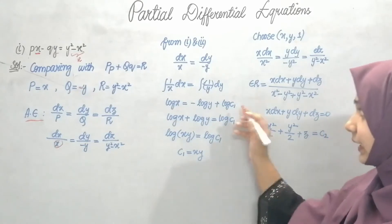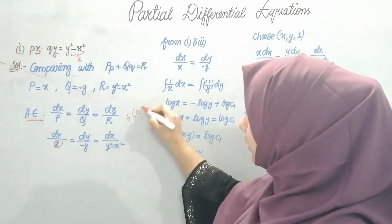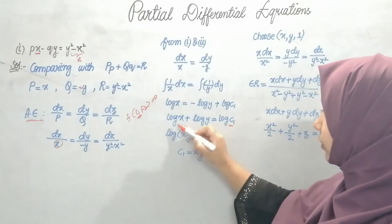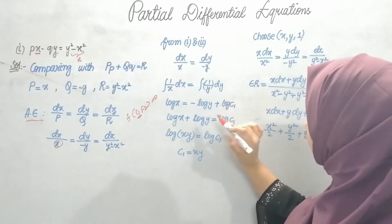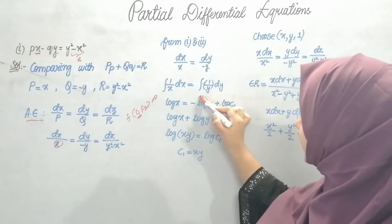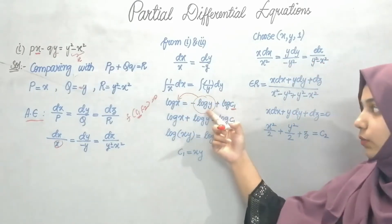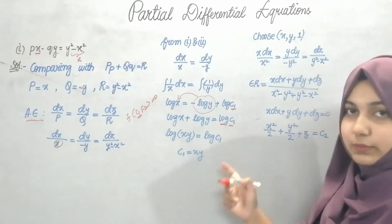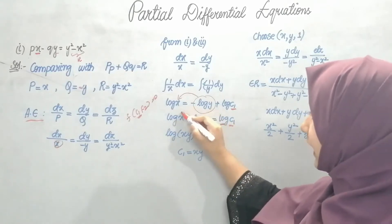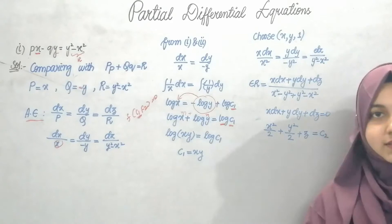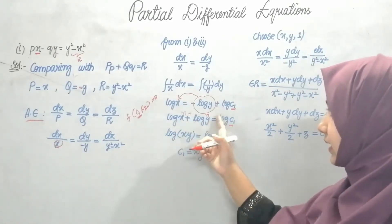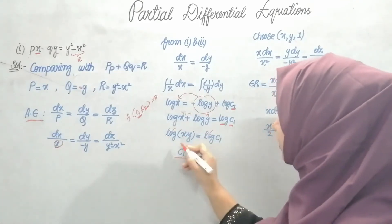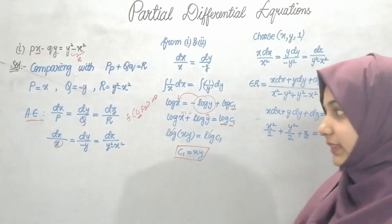In the general solution, f(C1, C2) = 0, so I need to find C1. I rearrange: log x plus log y equals log C1. Using the log identity log m + log n = log(mn), this gives log(xy) = log C1. The logs cancel, so C1 equals xy.